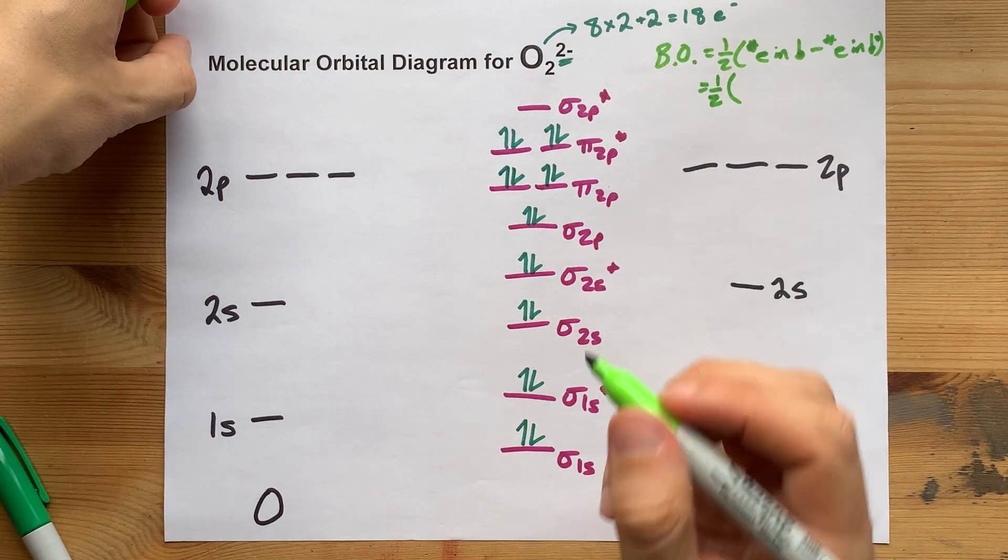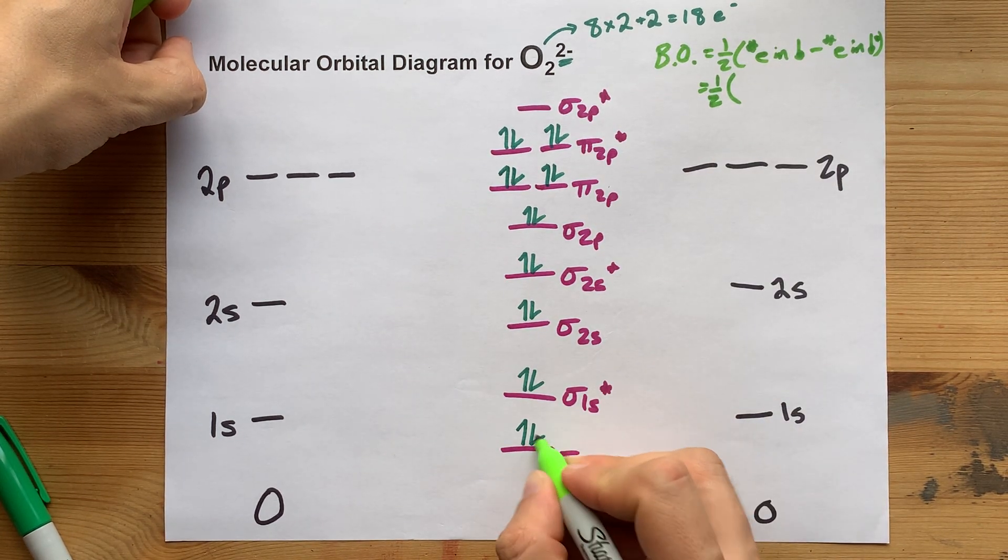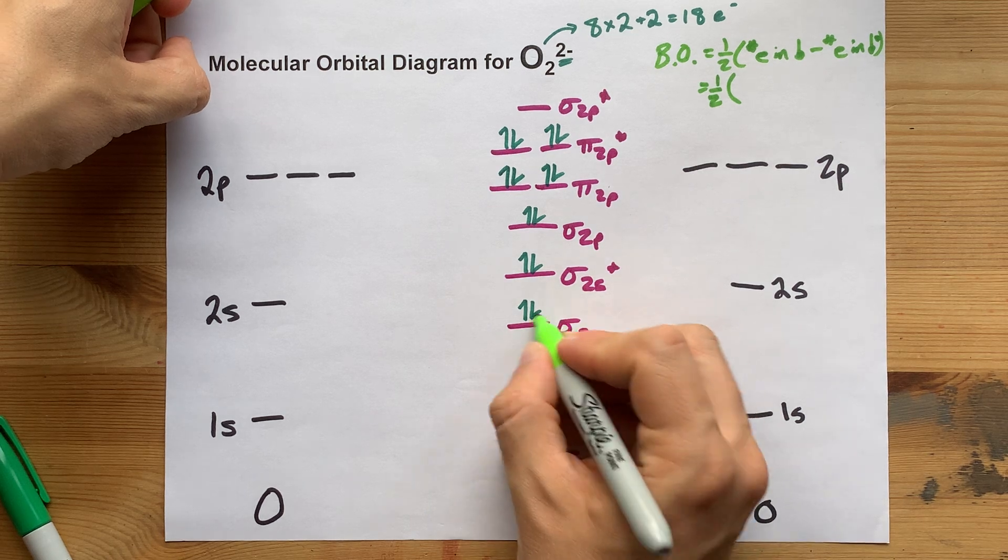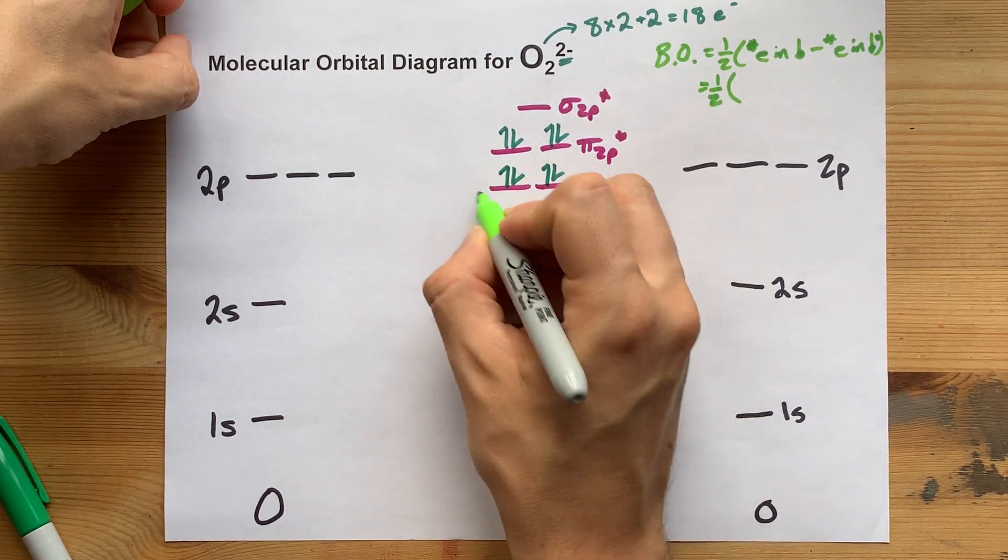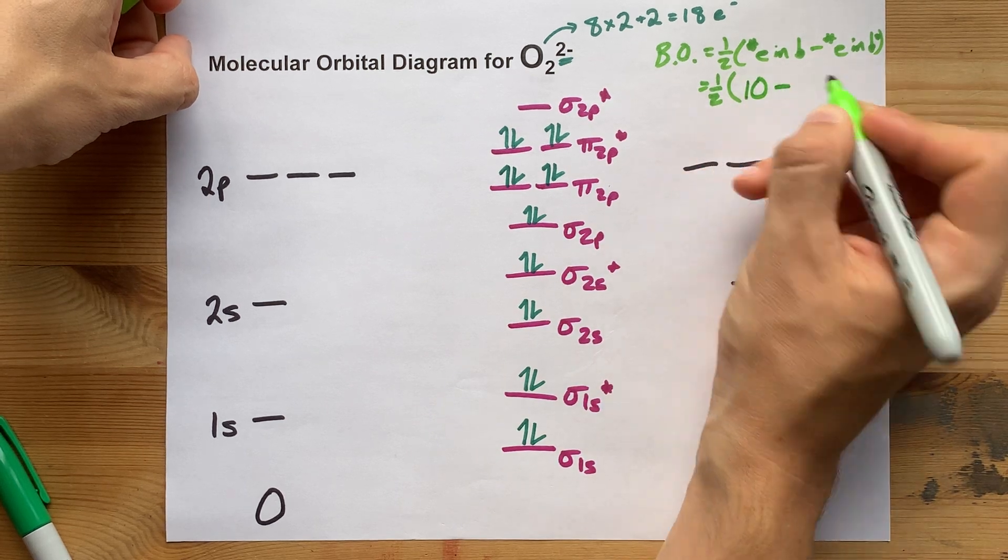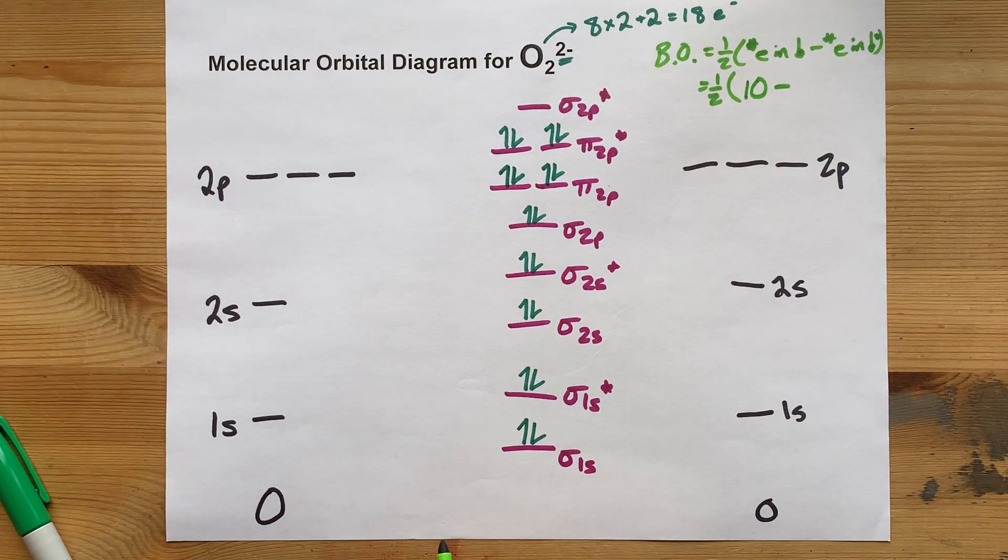Bonding orbitals don't have asterisks. So these two count, and these two count, and these two count, and these four count. That is 10 electrons in bonding orbitals.